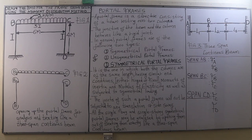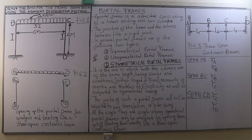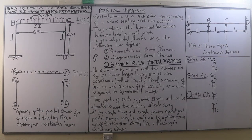For example, in Figure 1 we have beam BC loaded with a uniformly distributed load of 2 kN/m. Converting that UDL to a point load by multiplying by the span BC of 6 meters gives us 12 kN total. Each column carries half of that total load, so columns AB and DC each carry 6 kN. Therefore the reactions at A and D are 6 kN each.